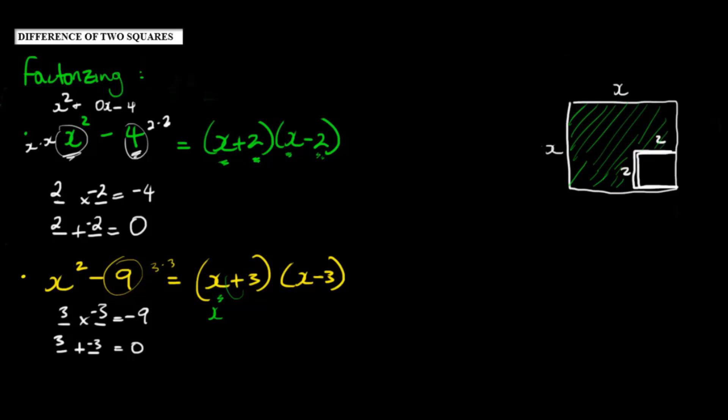then we multiply the sum and the difference of their roots. So it's basically saying that if I wanted to figure out the area of this section, the difference between the two squares, all I would have to do is to multiply the sum of their roots, or the sum of the sides by the difference of the sides.